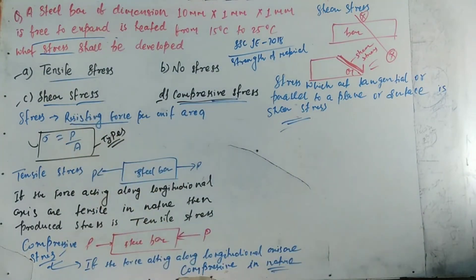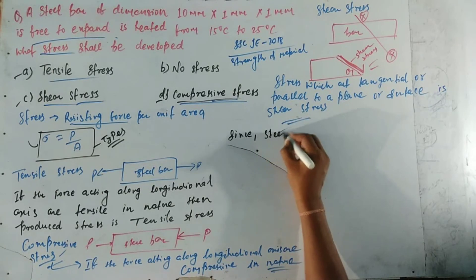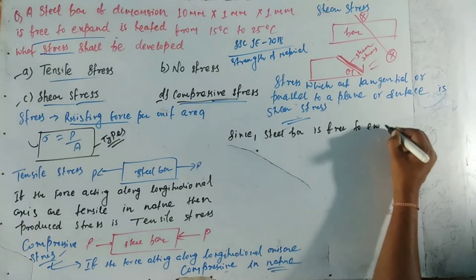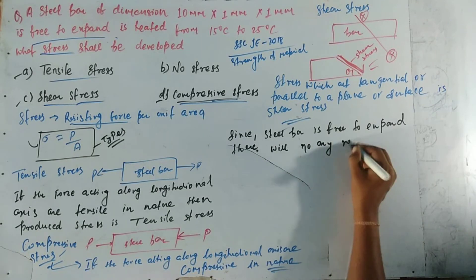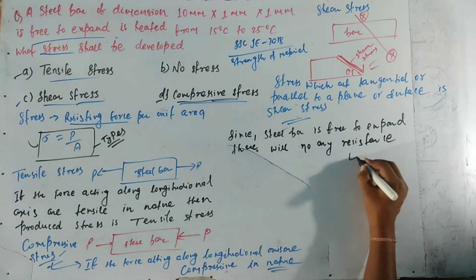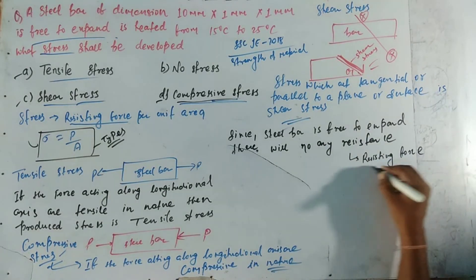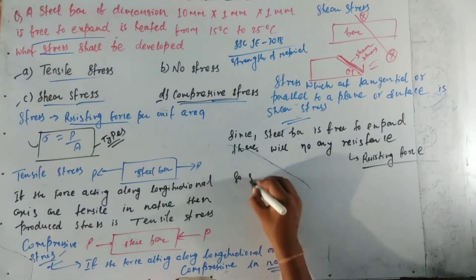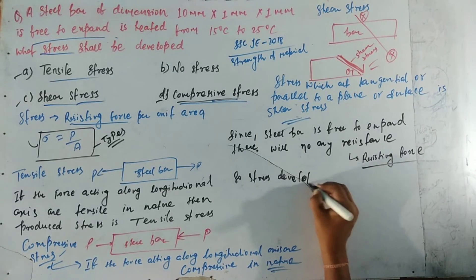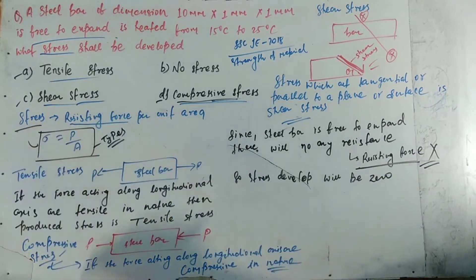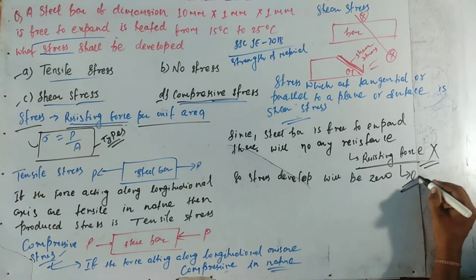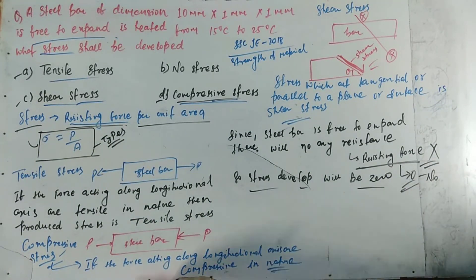Now, according to the question, the bar expands freely. This means there is no resisting force acting on the bar. There will be no resistance or resisting force, and that is why the stress developed on the bar will be equal to zero. Since stress equals resisting force per unit area, and the resisting force is zero, the stress produced is zero — that is, no stress is produced on the bar.